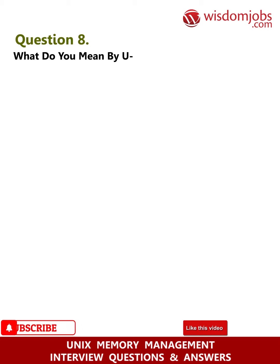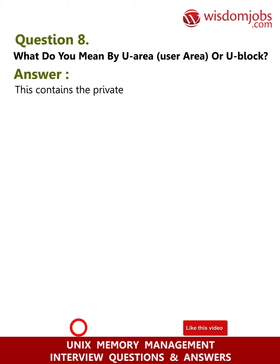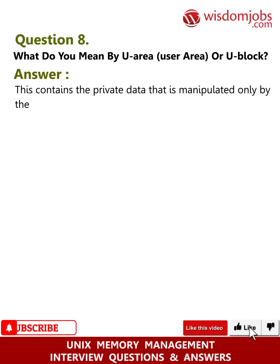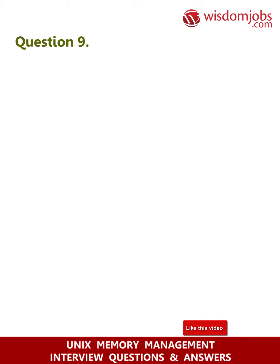Question 8: What do you mean by U area (user area or U block)? Answer: The U area contains private data that is manipulated only by the kernel. It is local to the process — each process is allocated a U area.